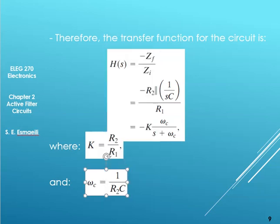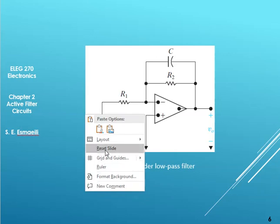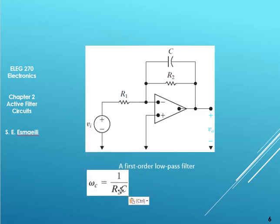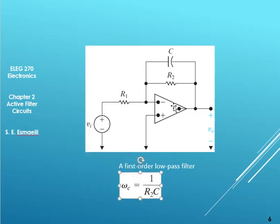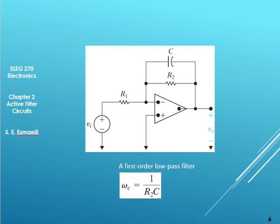Our cutoff frequency for this filter is 1 over R2C. As simple as that, this is how we can find the cutoff frequency and the general format for the transfer function of a filter like that.